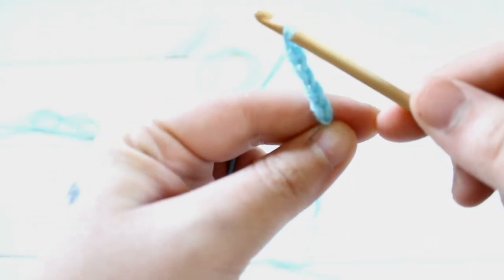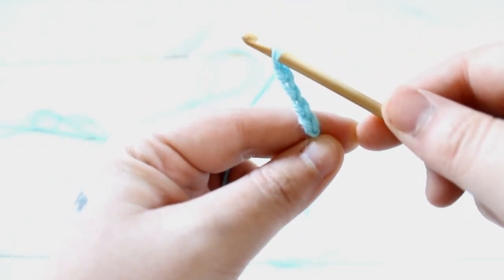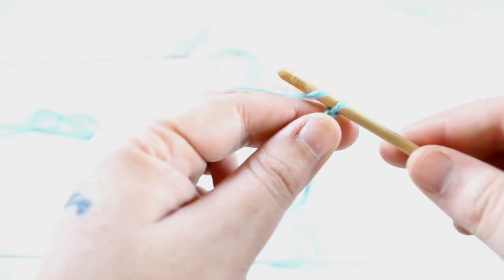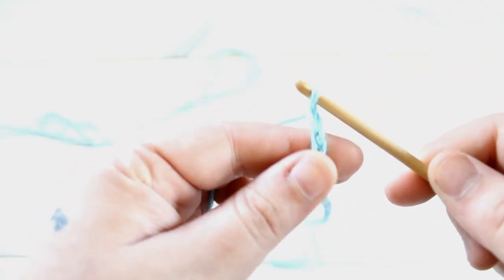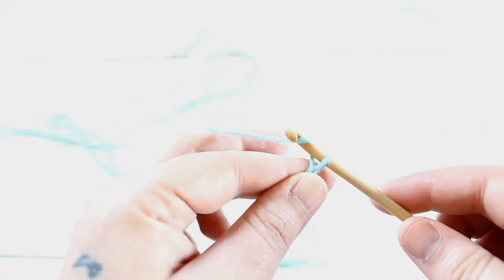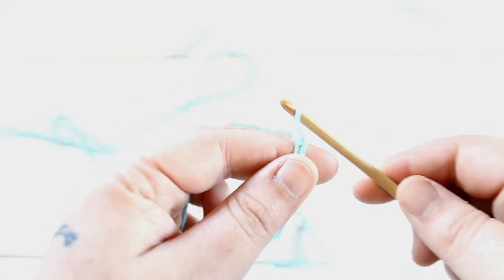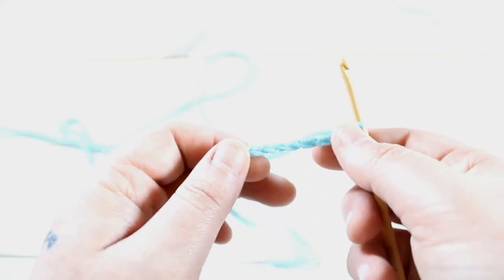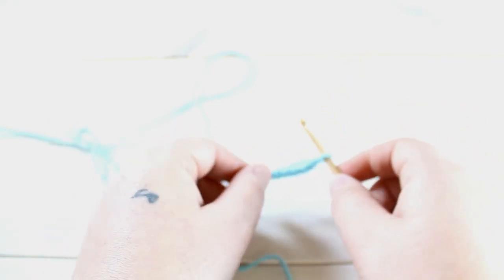So I've now done about five chain stitches. I'll show you just a few more. So all you're doing is you're just pulling that yarn through the last loop, and that is a chain stitch. Join us in our next video and we'll be tackling more crochet stitches.